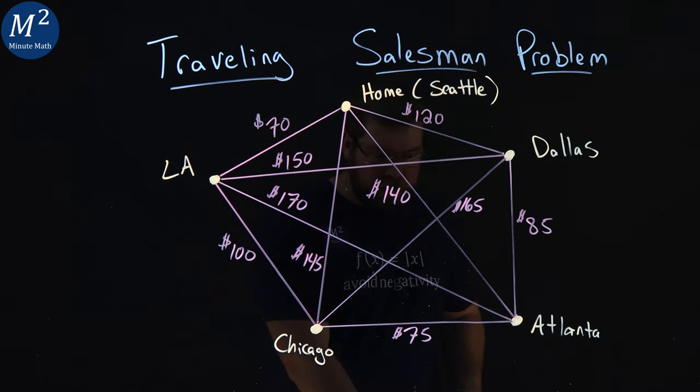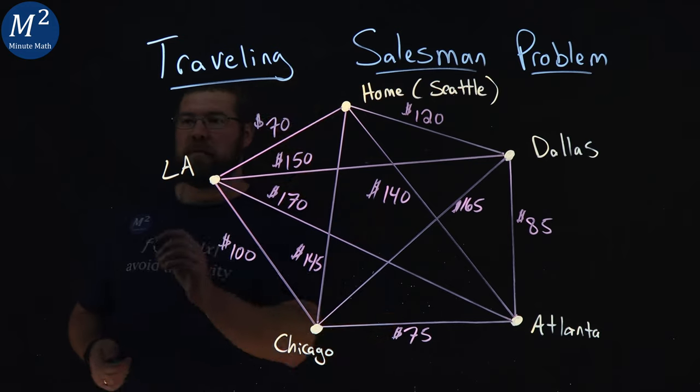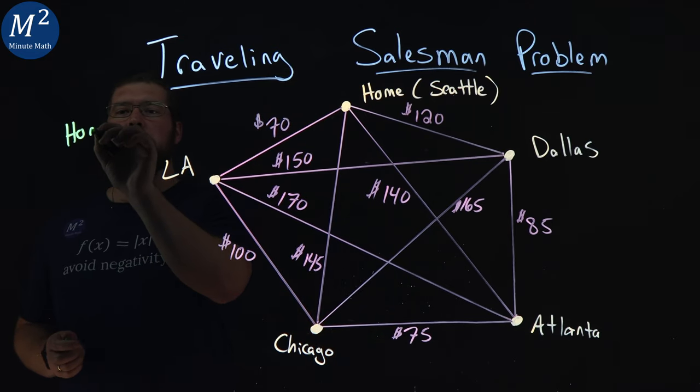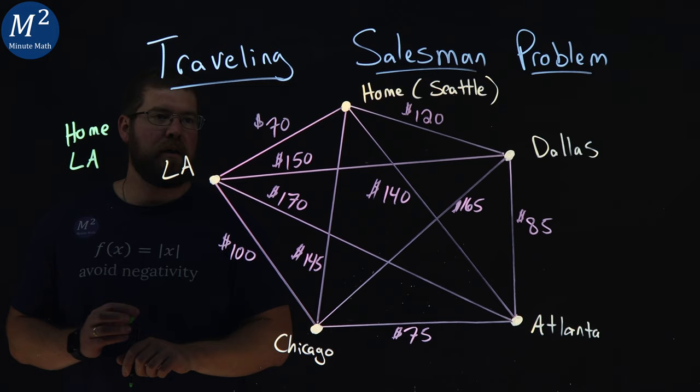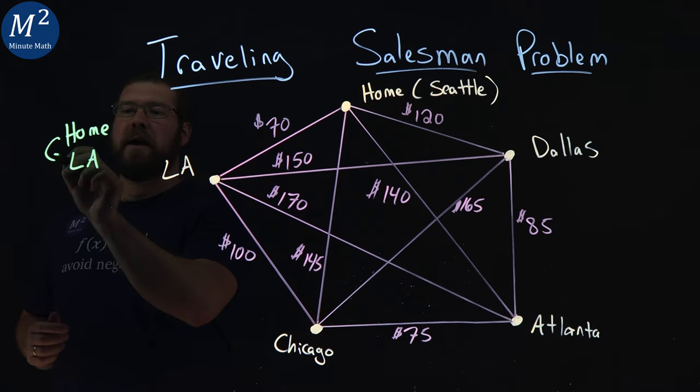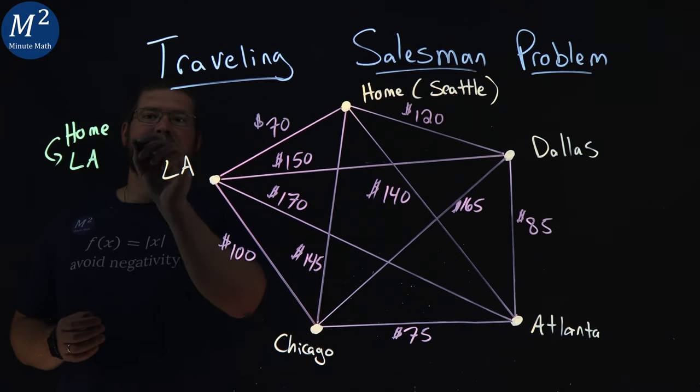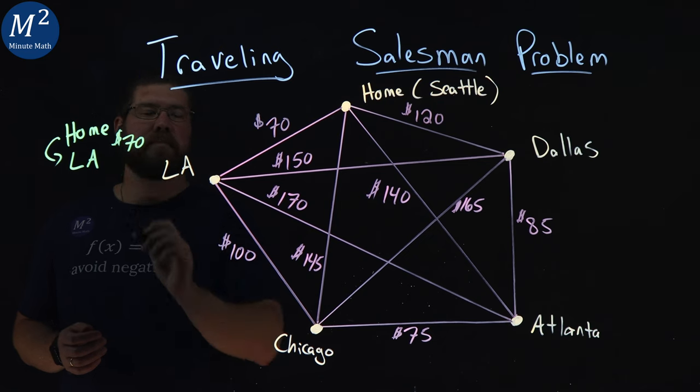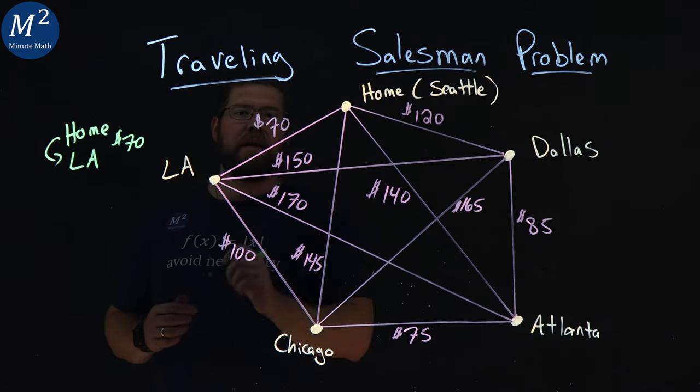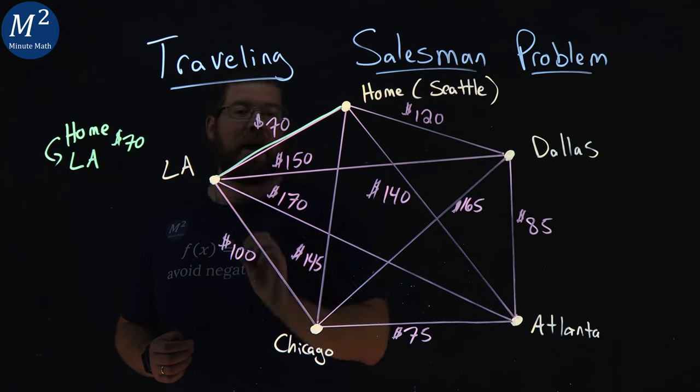So our order here, if I want to write it out, let's go from home to LA. So we're going from home to LA, and that cost here was $70. So we went from home to LA, and we can even highlight that path.